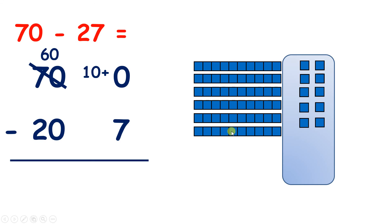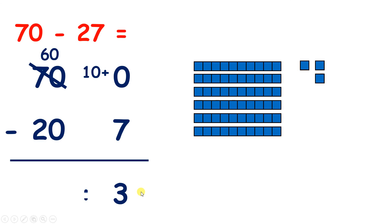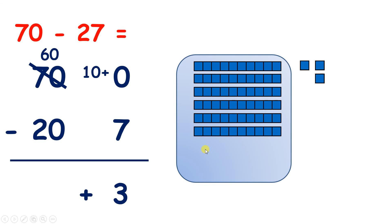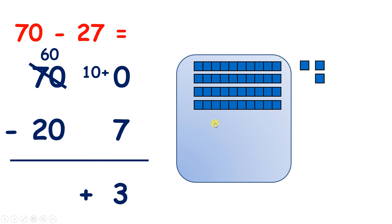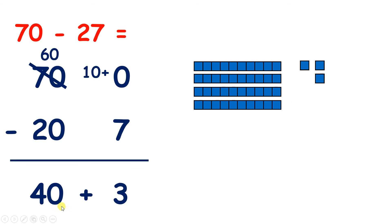Now we can subtract 7 — 1, 2, 3, 4, 5, 6, 7 — and that leaves us with 3 units. So now we're done with our units and we can move on to our tens. We now have 6 tens, or 60, and we want to take away 20, which is 2 tens. So if we take away 1, 2 tens, that leaves us with 4 tens, or 40. 60 take away 20 is 40. So now our answer is 40 plus 3, which is 43.